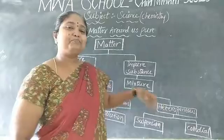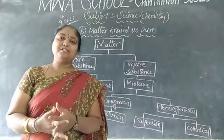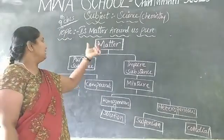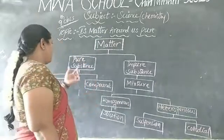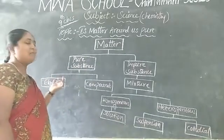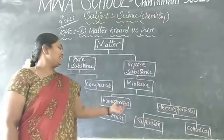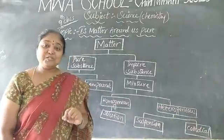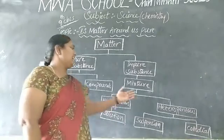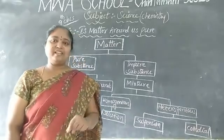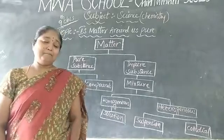Let me start. Are you ready? Now, this one we call it as a mind map. That means, what are the total concepts we are going to learn in this chapter? Matter is divided into two substances — pure substance and impure substance. Pure substance is divided into elements and compounds. Then, impure substance is divided into mixture. Mixture is divided into homogeneous mixture and heterogeneous mixture. Homogeneous gives solution; heterogeneous gives suspension and colloidal. So the total chapter will be covered. We call this a mind map.